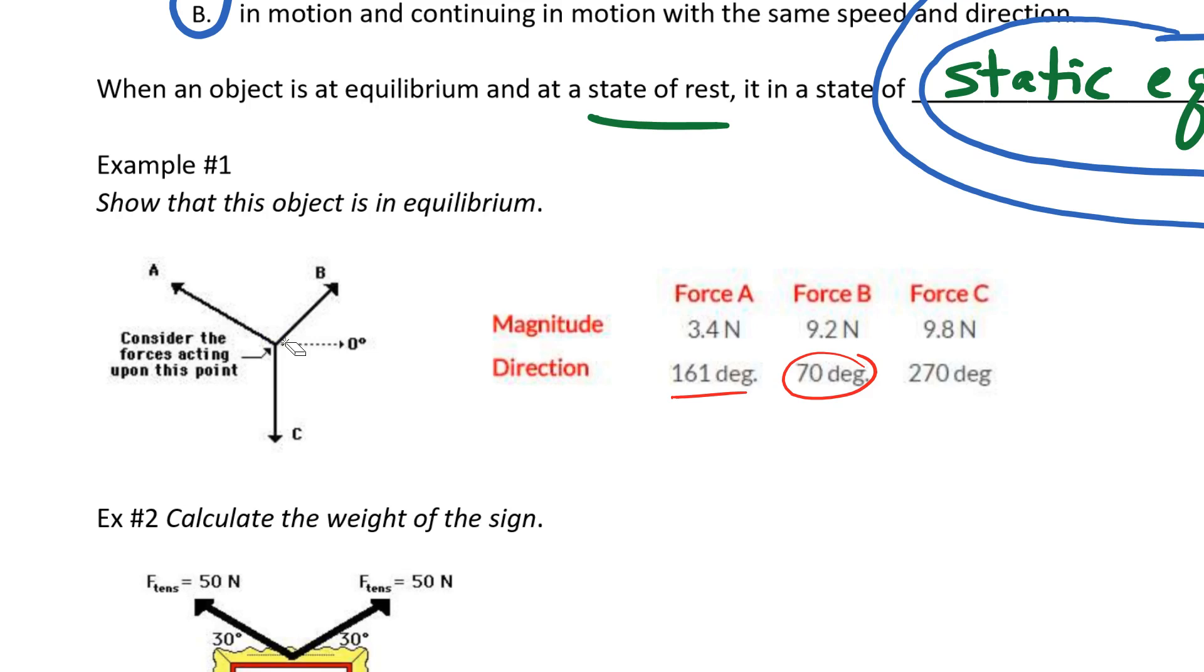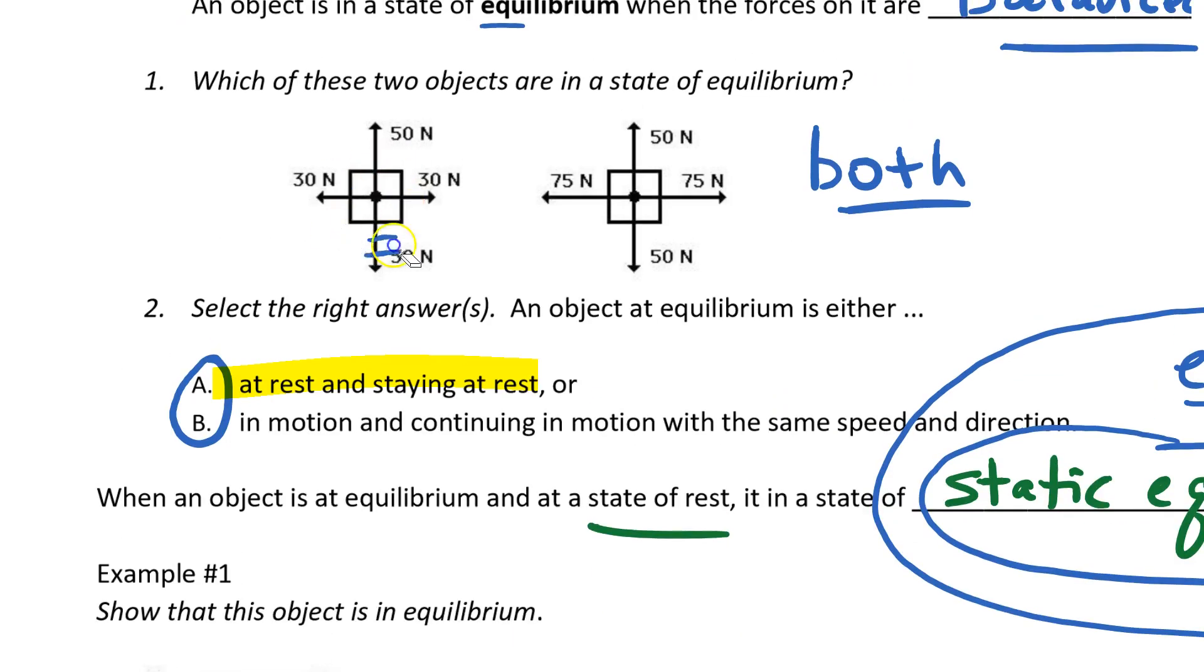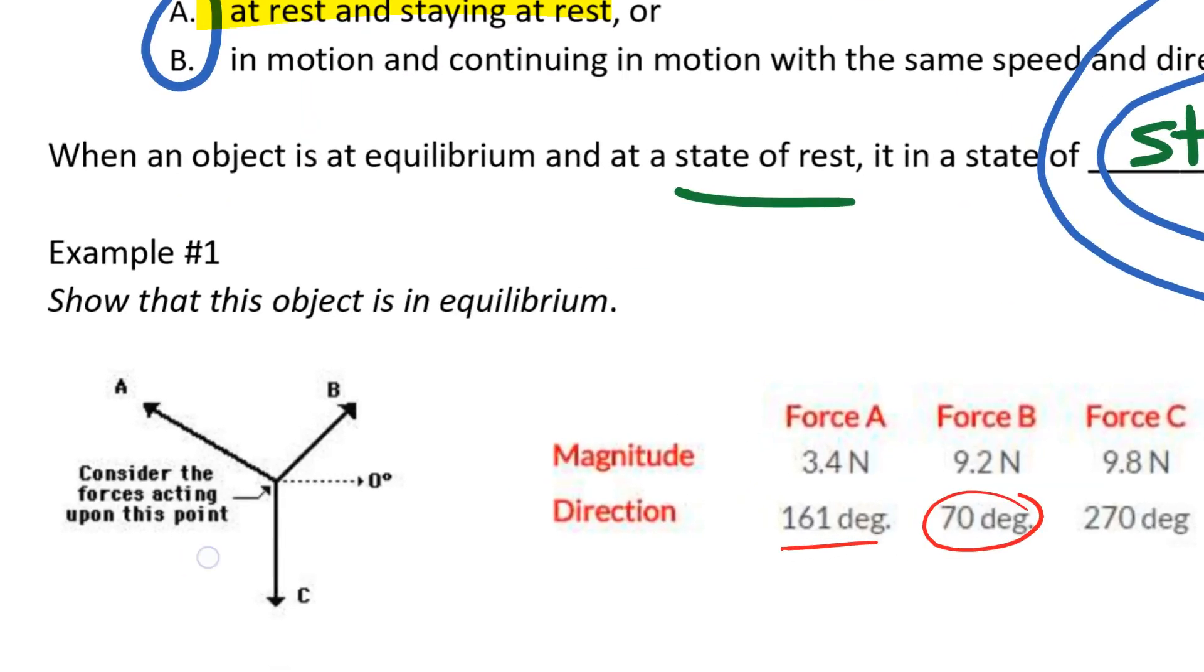But how could we show that this is in static equilibrium? It's more complicated than these examples up here because these ones have them all lined up in terms of the x's and the y's. So what we could do is make example number one look a little bit more like those previous ones. Instead of drawing B, we could replace B with the x component of B, Bx, and the y component of B.